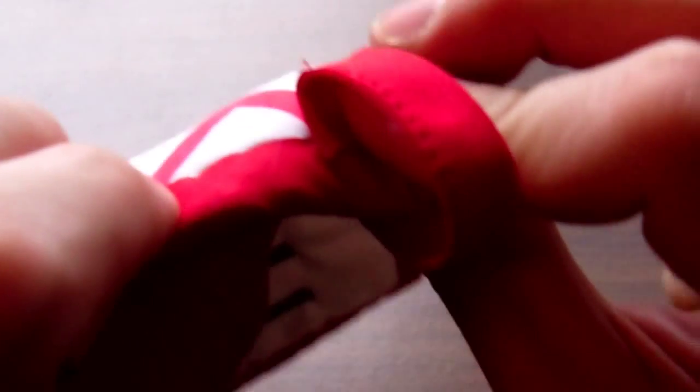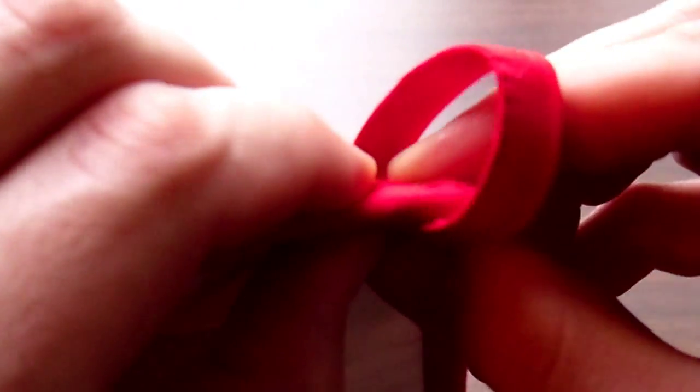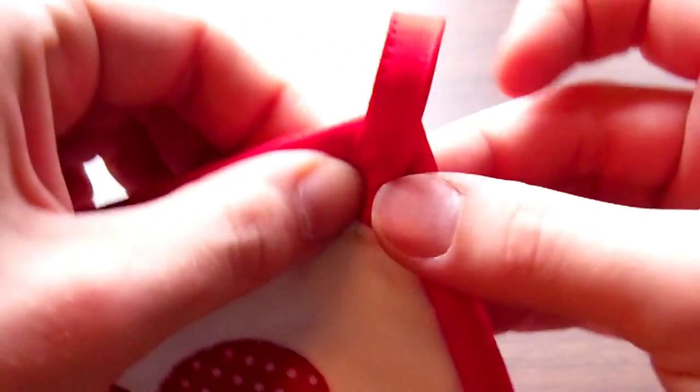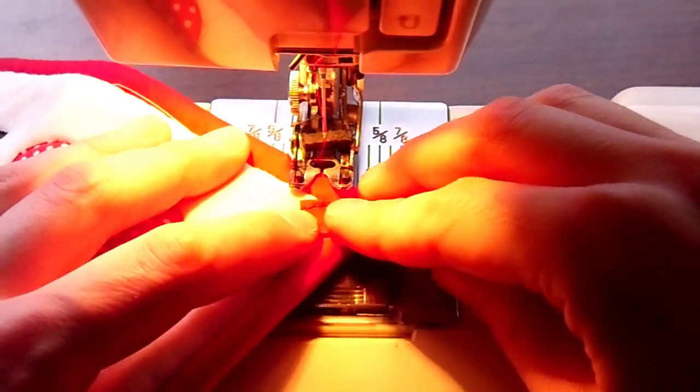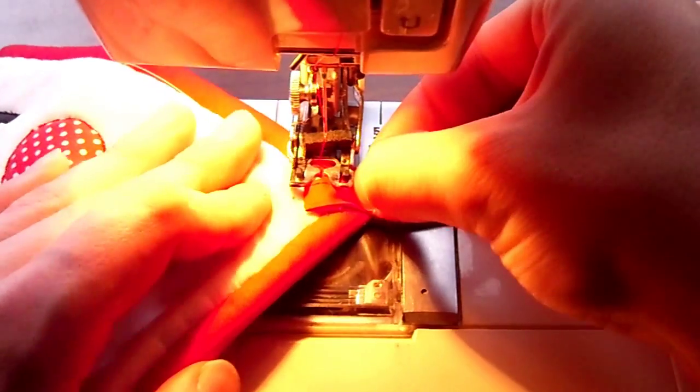Fold under the other end and place at the same location on the back side. Finger pin and stitch in place. I make two lines of stitching for the loops for extra strength.